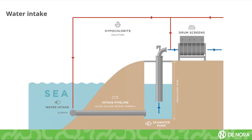With seawater electrochlorination, we produce a hypochlorite solution of about 0.2 percent concentration, which is a very benign type of disinfection product. You will be dosing this near the entrance, before the drum screens. Depending on your application, it could also be dosed directly into the equalizing tank or at some other point in the process.